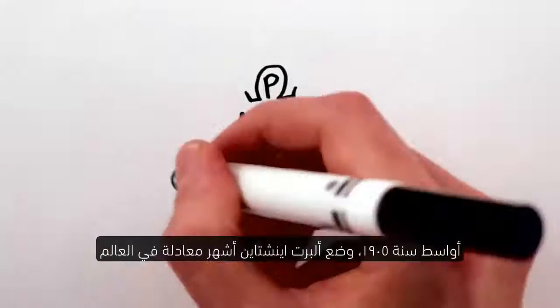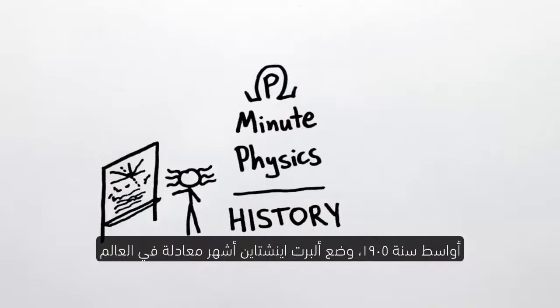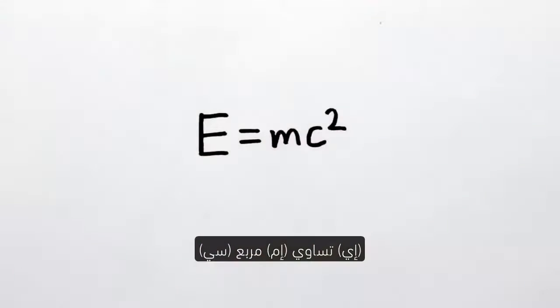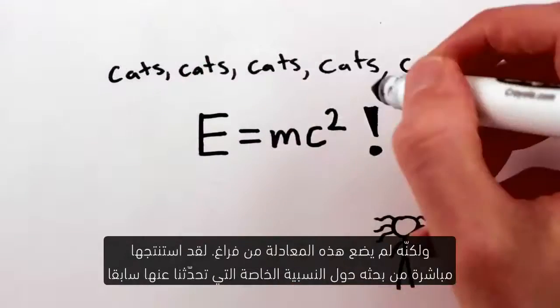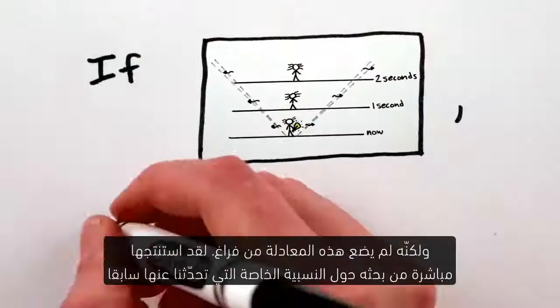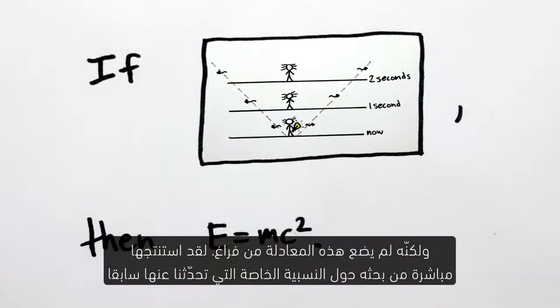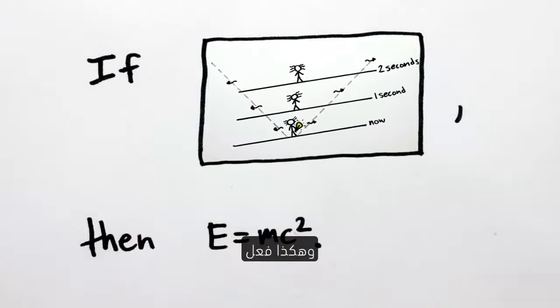In mid-1905, Albert Einstein derived what is now the most famous equation in the world, E equals mc squared. But he didn't just write this down out of the blue — it followed directly from his paper on special relativity that we talked about in last week's video. And here's how he did it.